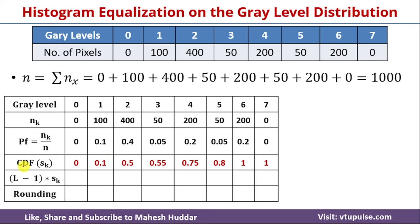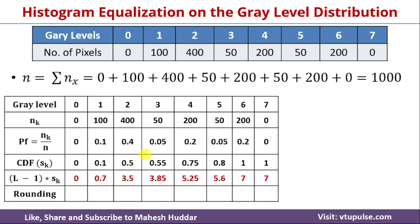Once we calculate sk, the cumulative distribution function, we need to multiply it by the number of levels minus 1. The levels are 0 to 7, so L equals 8, and L minus 1 equals 7. So we compute 7 multiplied by sk. For the first case, 7 × 0 = 0. Then 7 × 0.1 = 0.7. Then 7 × 0.5 = 3.5, and so on. Once we calculate all these values, they look something like this.